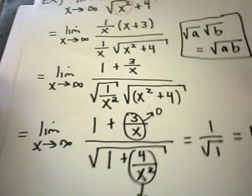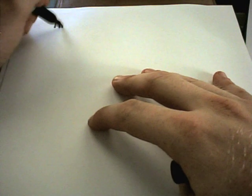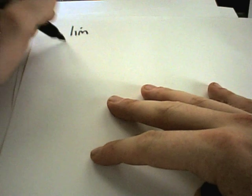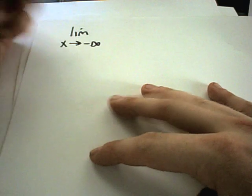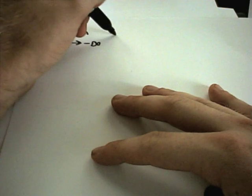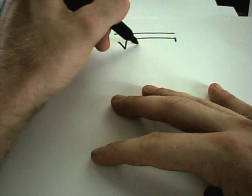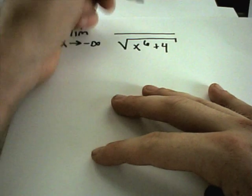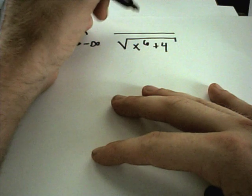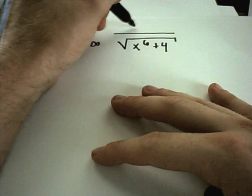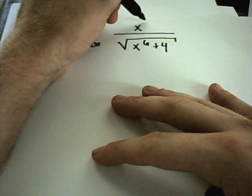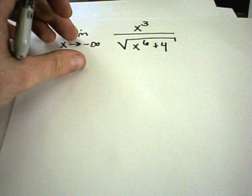Let's take a slight variation of this problem. Pull out another piece of paper here. So let's look at, say, the limit. Let's do the limit as x goes to, this time, negative infinity. And how about we make it, how about the square root of x to the sixth plus 4 over, we'll make it, how about x to the, I don't know, third.